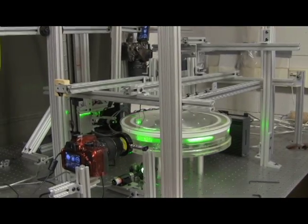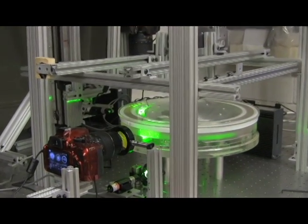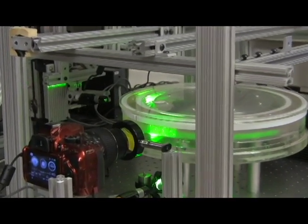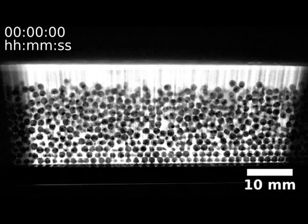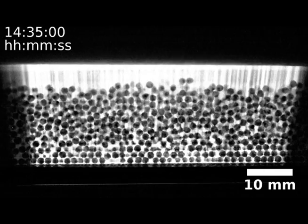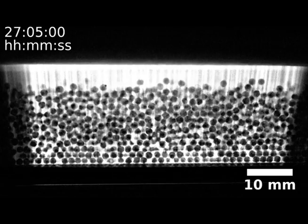Using a neat optical trick called refractive index matching, we can actually see inside the granular bed, which allows us to not only look at the motion of particles on the surface of this scaled-down river bed but to look at the motion of the underlying particles as well.